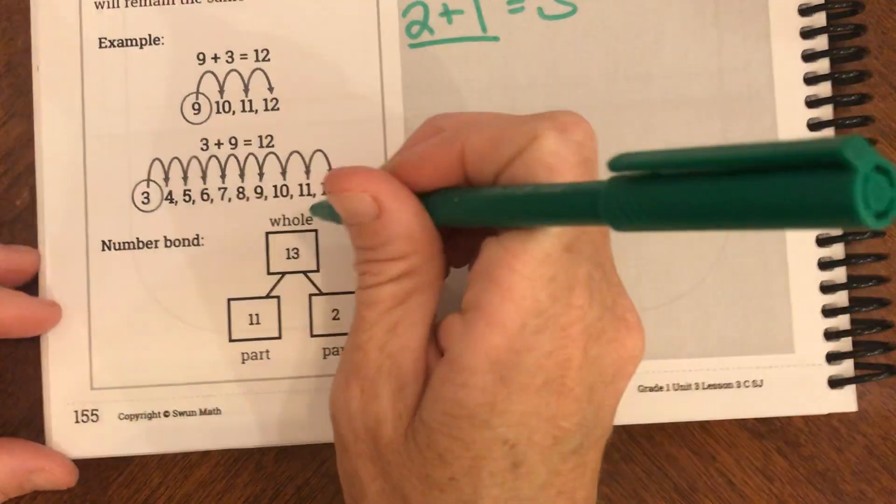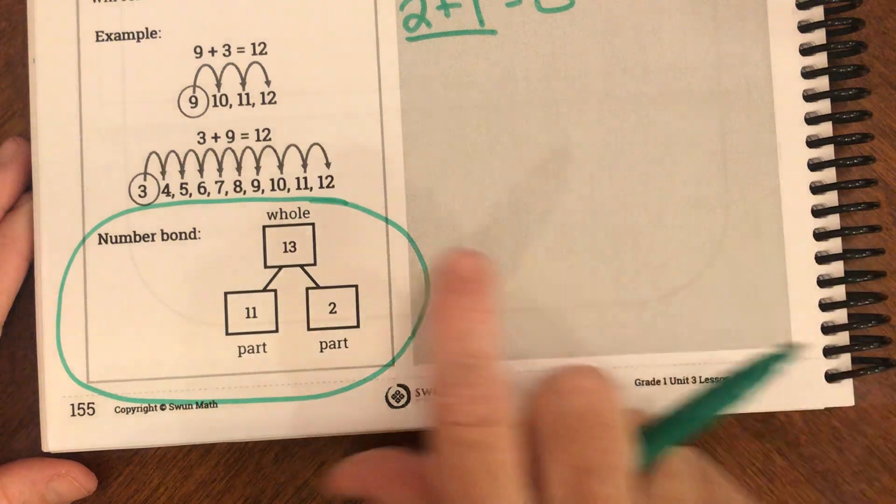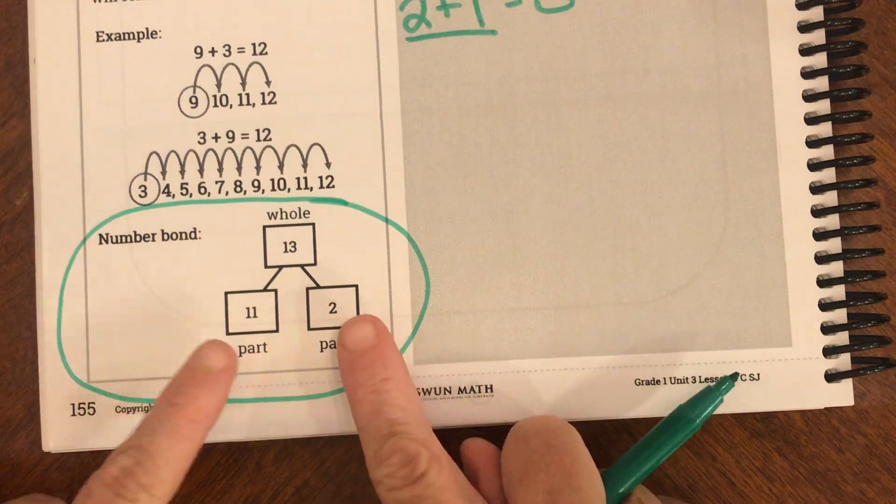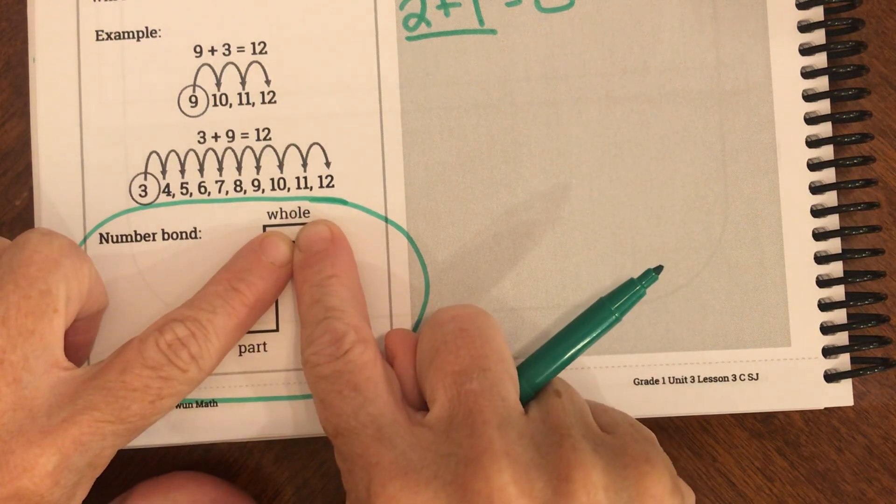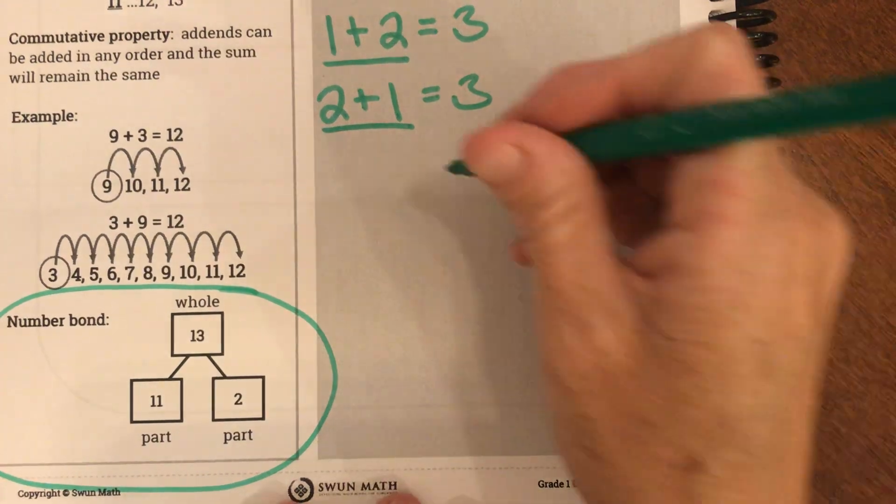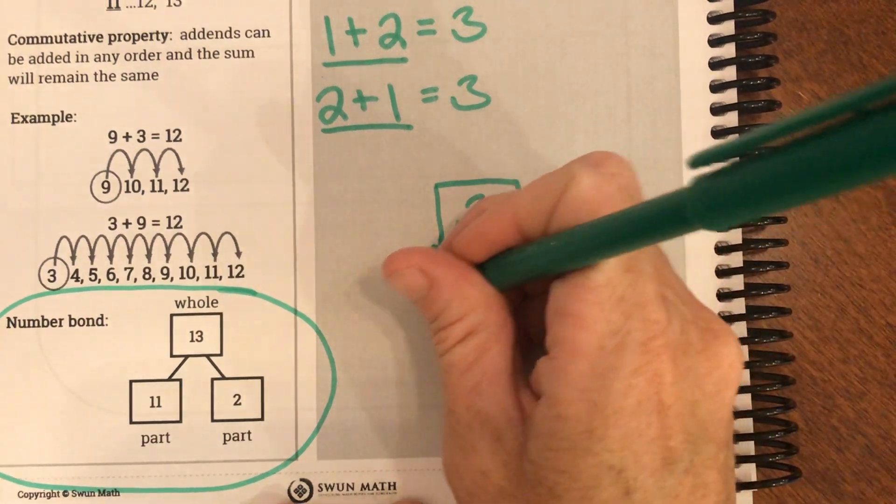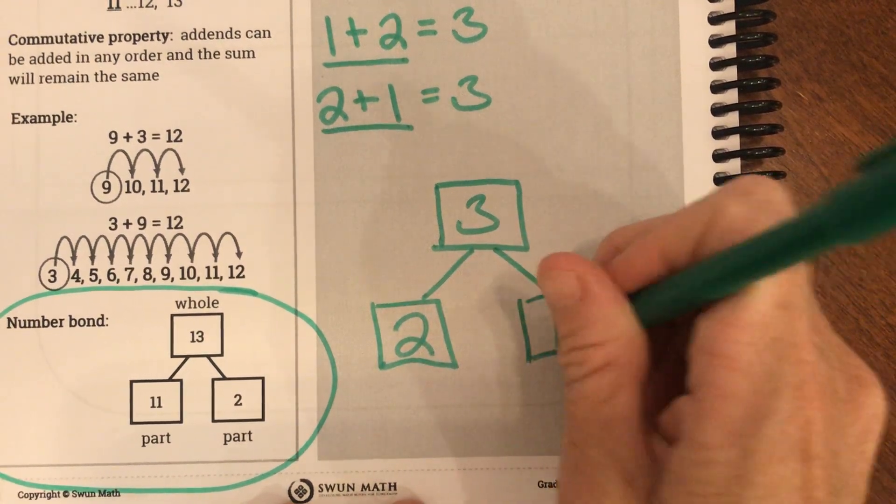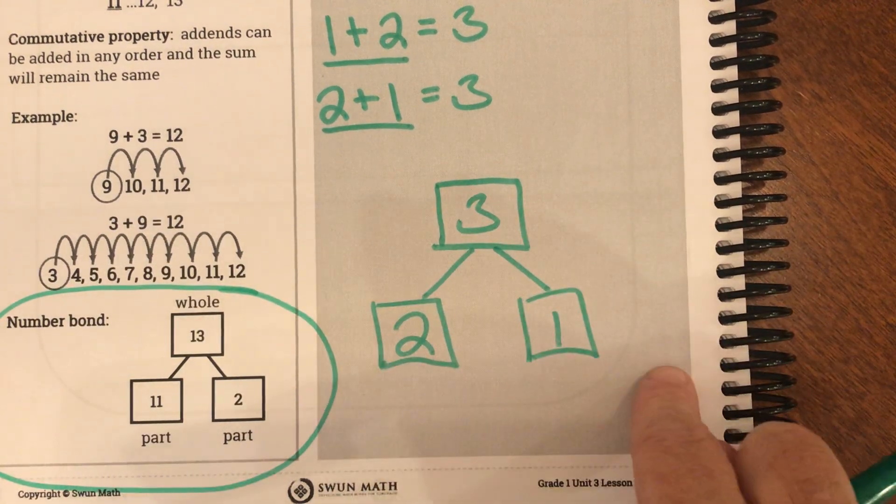This is going to be a big part that we're going to talk about today. This thing called a number bond. A number bond has the whole number up top and then the bottom it has the two parts. So the two parts make up the whole. So the two parts go together and they create the whole. So a number bond for our example that we wrote is I could say 3 would be my whole and what were my two addends? 2 and 1.